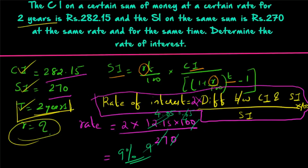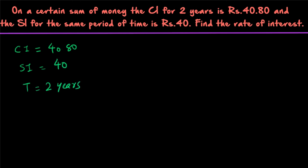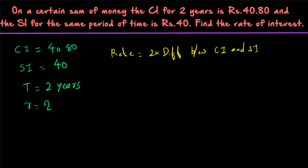Now question number two: on a certain sum of money the compound interest for two years is rupees 40.80 and the simple interest for the same period is rupees 40. Find the rate of interest. Compound interest is 40.80, simple interest is 40, and time is two years. We check first that time is two years, so we apply the shortcut formula: rate of interest equals 2 into (CI minus SI) divided by simple interest into 100.